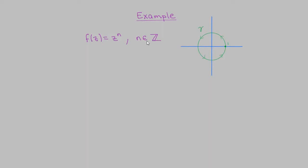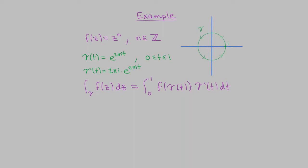There's one example in particular that's going to be very important going forward. Suppose n is an integer, and we want to compute the complex line integral of z^n around the curve gamma which traverses the unit circle one time, starting from the point 1 and moving counterclockwise. A nice parametrization is γ(t) = e^(2πit), t going from 0 to 1, with γ'(t) = 2πi e^(2πit). Substituting into the definition, the integral equals 2πi times the integral from 0 to 1 of e^(2πi(n+1)t) dt.